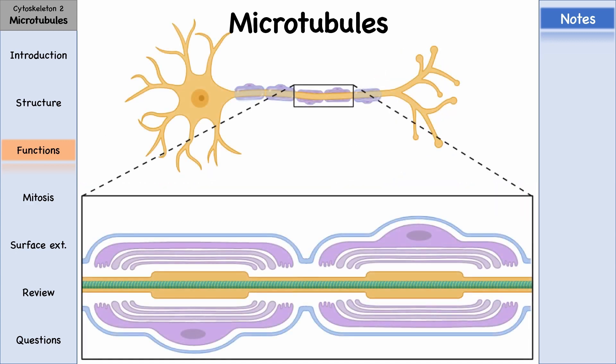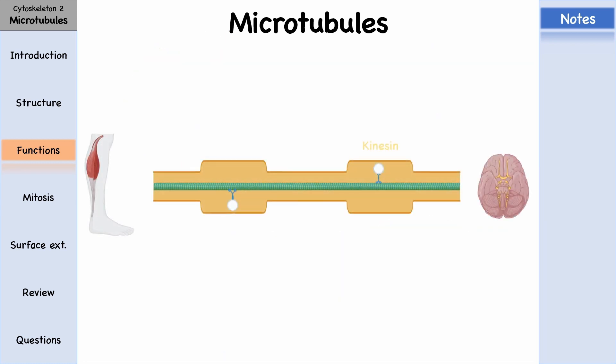In neurons, for example, the protein kinesin transports vesicles toward the positive end, beta-tubulin, that is upward towards the brain, and we call this path anterograde.